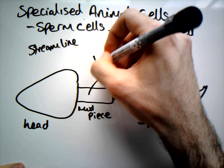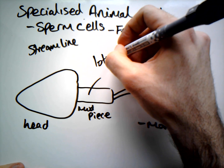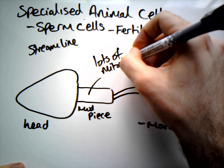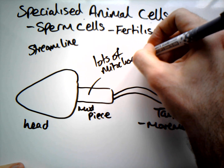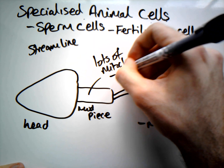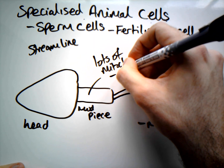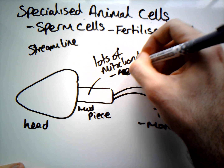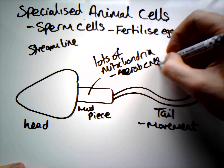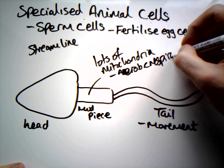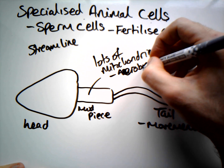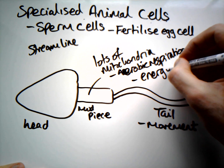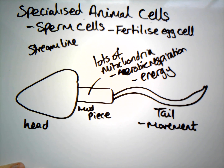Within the mid piece we have lots of mitochondria. These carry out aerobic respiration, which is really important because it releases energy, and that energy is used to allow the sperm to swim.